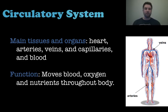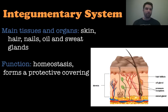Next is the circulatory system, which includes the heart, arteries, veins, capillaries, and blood. That's the heart pumping your blood through all this network of veins and arteries and capillaries to deliver oxygen and nutrients throughout the entire body. Next is the integumentary system — your skin, hair, nails, and oil and sweat glands. This helps maintain homeostasis and forms a protective covering over your body. In fact, the skin is the largest organ in the body.